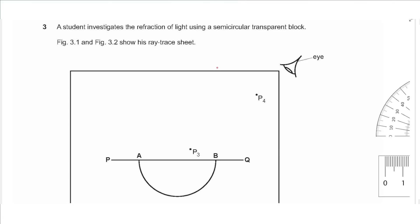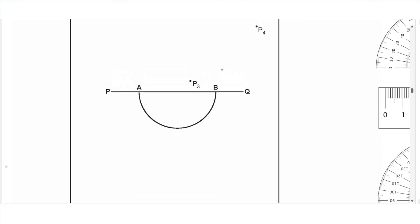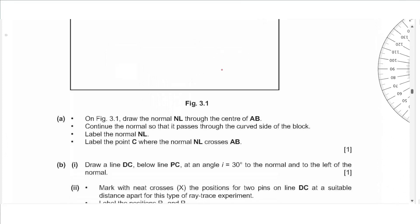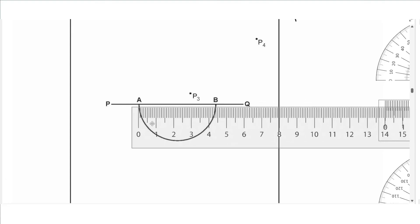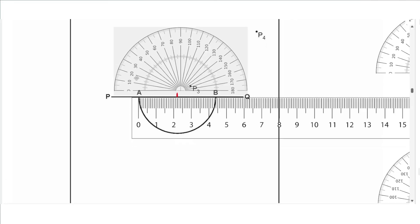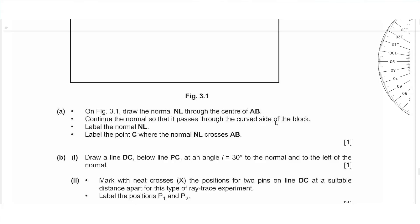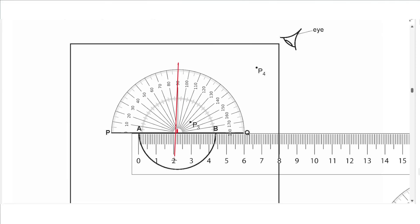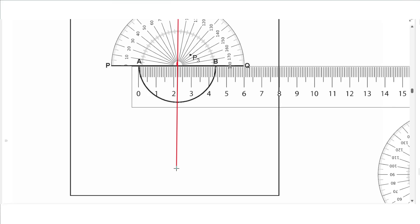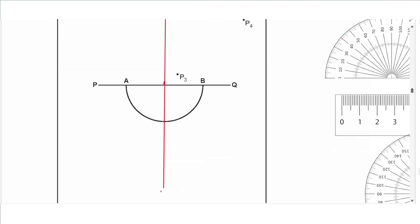Question 3: a student investigates the refraction of light using a semicircular transparent block. Figures 3.1 and 3.2 show the ray trace sheet. We have the block with flat surface AB and two pins P3 and P4. Part a says draw the normal NL through the center of AB. First find the center of AB: the distance is approximately 4.4 cm, so place a mark at 2.2 cm. Use a protractor to draw 90 degrees — the normal — and extend it through the curved side. Label the line N at top and L at bottom.